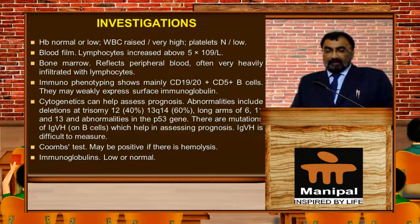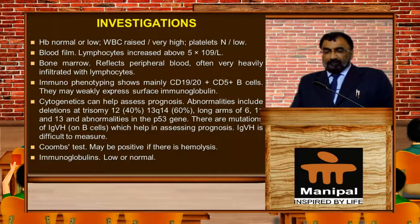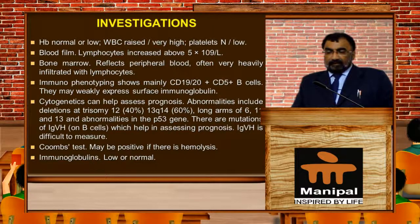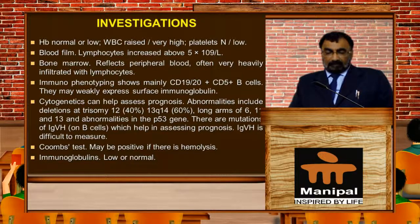Cytogenetics can help assess prognosis. Abnormalities include deletion or trisomy — trisomy at 40%, 13q deletion, long arm of 6, 11, and 17p. Abnormality of p53 — the guardian of the genome — is also seen. There are mutations of IgVH on B cells which help in assessing prognosis. Coombs test may be positive if there is hemolysis, and immunoglobulins may be low.